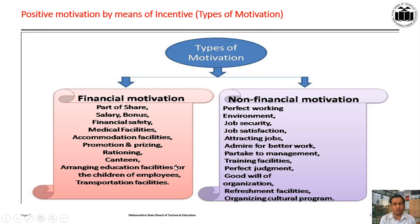Motivation may be positive or negative. If positive motivation is present, it may be financial or non-financial. Financial motivation is related to money — examples include part of share, salary, bonus, financial safety, medical facilities, accommodation facilities, promotion and pricing, rationing, canteen, arranging education facilities for the children of employees, and transportation facilities. All these are examples of financial motivation because these facilities are directly related to money.